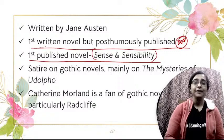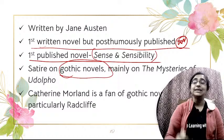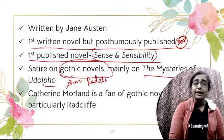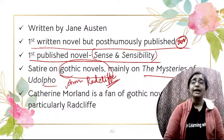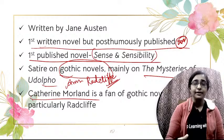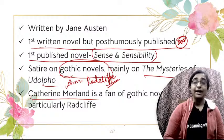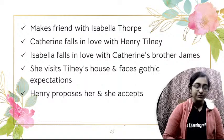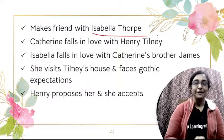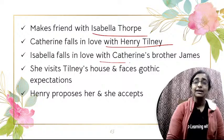Northanger Abbey is well known as a satire on gothic novels, and particularly a satire on The Mysteries of Udolpho by Ann Radcliffe. But it generally attacks the total structure of a gothic novel. The main female character is Catherine Morland, a very enthusiastic girl and a great fan of gothic novels, particularly Ann Radcliffe. Her best friend is Isabella Thorpe. Catherine shares all her experiences of reading gothic novels with Isabella. Catherine falls in love with Henry Tilney, and Isabella falls in love with Catherine's brother James.